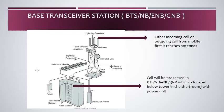In today's session, let's talk about the base station transceiver in detail. This is a recap of how the base station and antennas are placed. The base station is placed inside the tower and connected to the antenna through RF cables — radio frequency cables.